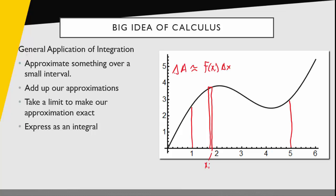What does my next step say in general? Add up our approximations. So the total area under the curve should approximate the sum of all those smaller approximations. Then we take a limit to make our approximation exact. So now I look at the limit as delta x goes to 0 of that sum.